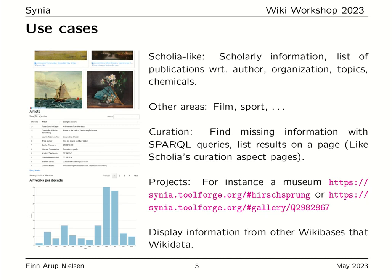Another approach would be to make Cynia templates for projects — for instance, a museum. An example is displayed here, which is actually also a gallery, so you can view this as a sort of normal Cynia aspect. The particular Cynia page displayed here shows information for a specific museum, including images from the museum as well as when the works were painted.